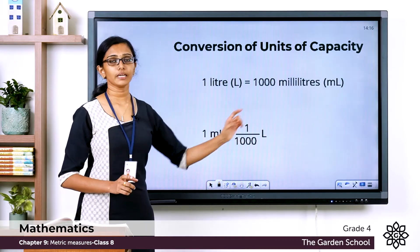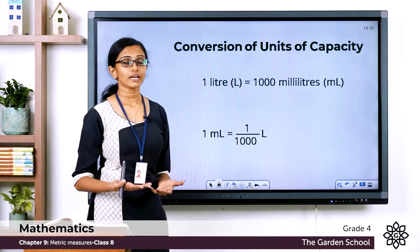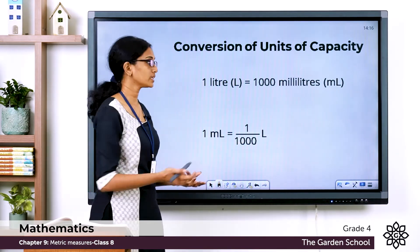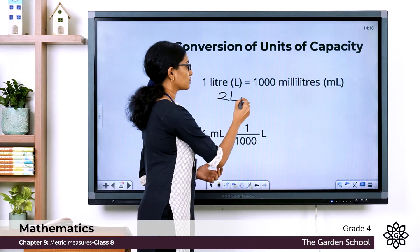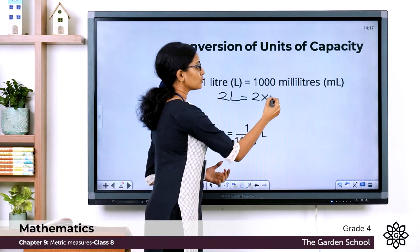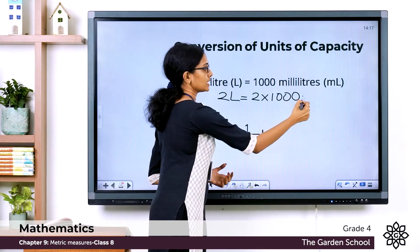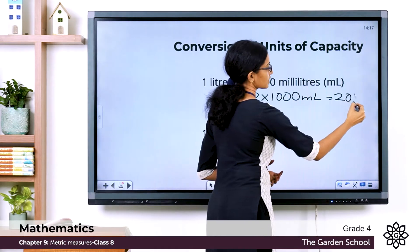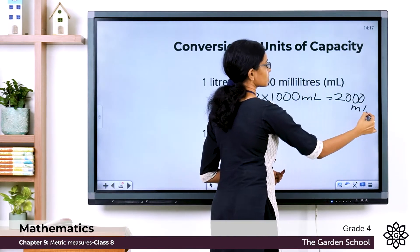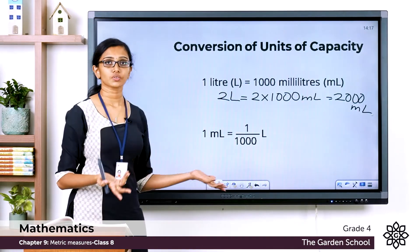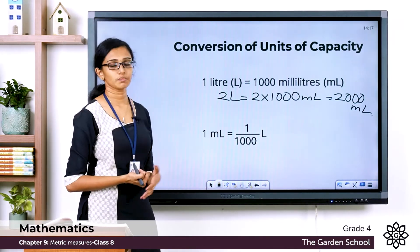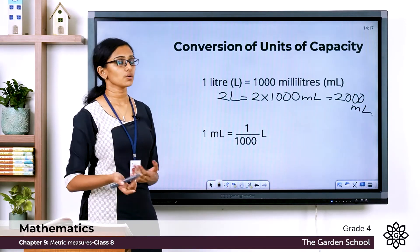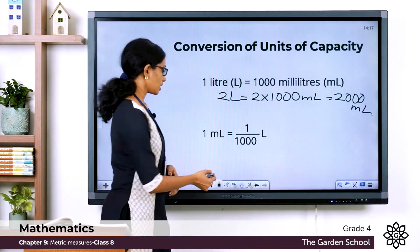One liter is equal to 1000 milliliters. So two liters would be equal to 2 × 1000 = 2000 milliliters. Three liters will be 3000 milliliters, four liters will be 4000 milliliters, and it goes on like that.